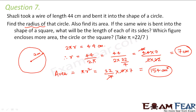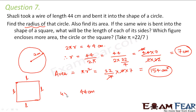If the same wire is bent into the shape of a square, what would be the length of each of its sides? The total length of the wire still remains 44 centimeters. In this case, 44 centimeters equals the perimeter of the square, which is 4 × side. So 4L = 44 centimeters, therefore L = 44 ÷ 4 = 11 centimeters. The length of each side of the square is 11 centimeters.